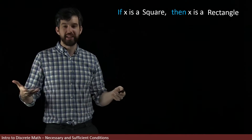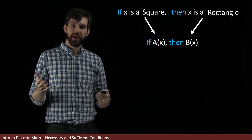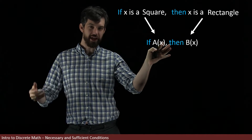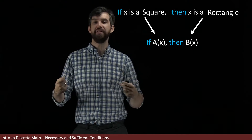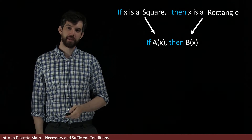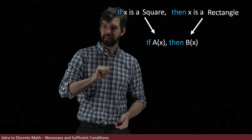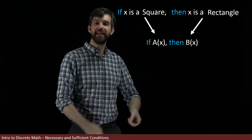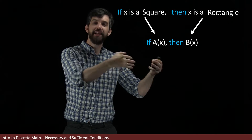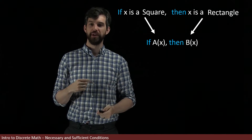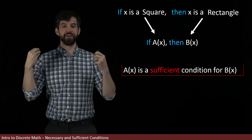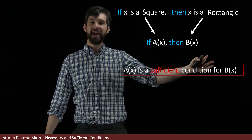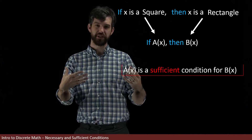The general logical structure here is: if some initial property A(x) — such as x being a square — then some final property B(x) — in this case, x being a rectangle. The way to think about this is that if I'm given the first thing, it must be the case that I get the second. In other words, it is sufficient to know the first in order to conclude the second, so we call this a sufficient condition.